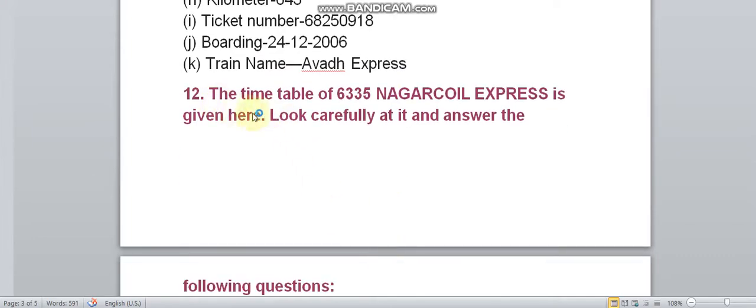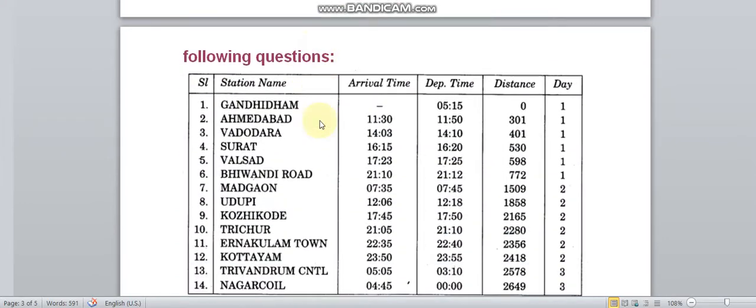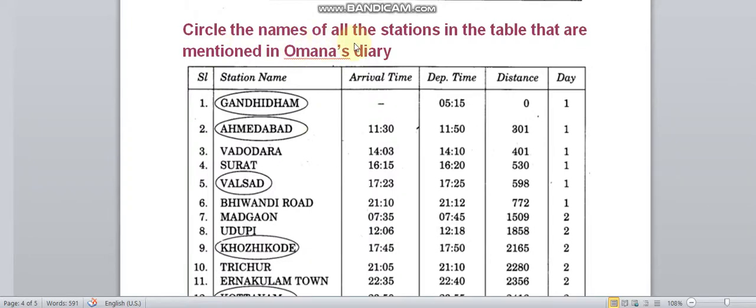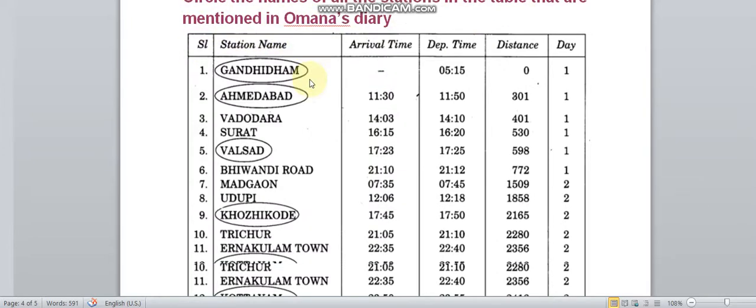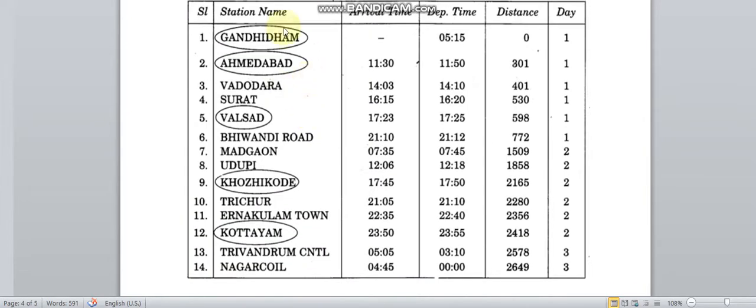The timetable of Nagarcoil Express is given here. Look carefully at it and answer the following questions. Circle the names of all the stations in the table that are mentioned in Omana's diary. The stations are Gandhidham, Ahmedabad, Valsad, Kozhikode and Kottayam.